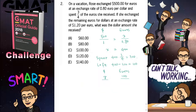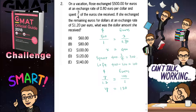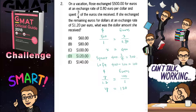This time the exchange rate is $1.20 per euro. So if I put 1 underneath the euro side, I put 1.2 underneath the dollar side. Now I have this proportion, and again cross multiplication gives Y equals 120. Voilà — that's our answer. She will receive $120 for her 100 euros. The answer is D.